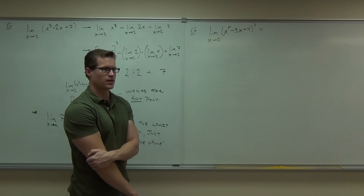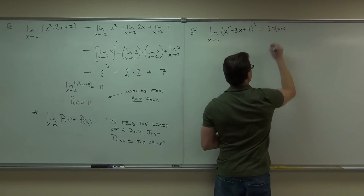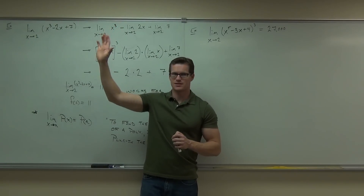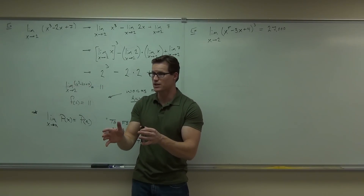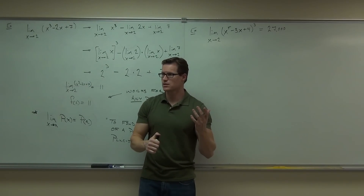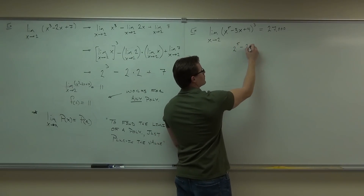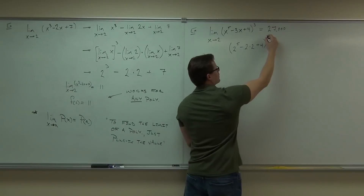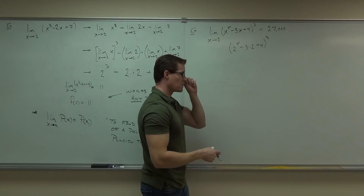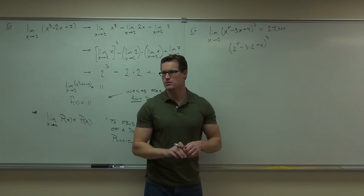So is it 30 to the third power? 27,000. How many people got 27,000? So do you see that what we're actually doing is saying: I know this limit is the same thing as evaluating when I plug in the number 2, and then cube it. 2⁵ is 32, minus 3 times 2 which is 6, so 32 minus 6 is 26, plus 4 is 30. 30 to the third power, and you get 27,000. You just evaluated your first limit.